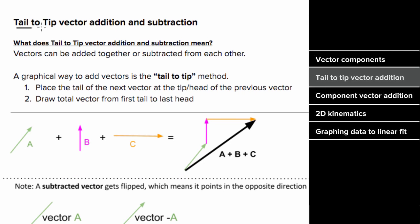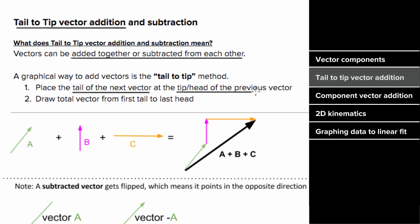What does tail-to-tip or head-to-tail vector addition mean? This is a graphical way to add or subtract vectors. The way it works is by taking the tail of the next vector and placing it at the tip or head of the previous vector. Once you've done this for all your vectors, you draw the total vector from the first tail to the last head.